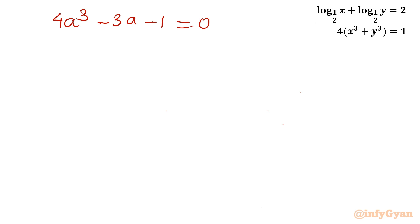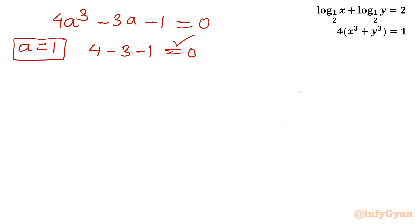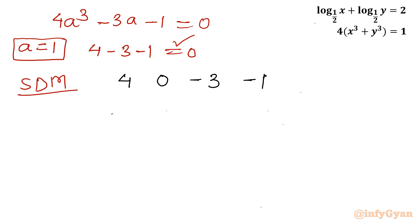If I add all the coefficients — that means putting a equal to 1 — I can see the result is 0. So a equal to 1 is a root. Now I can use the synthetic division method. The coefficients of the cubic equation are: 4 for a cube, 0 for a square (as it is not present), negative 3 for a, and negative 1 as the constant. We write the leading coefficient as is, with a equal to 1 as our known root.